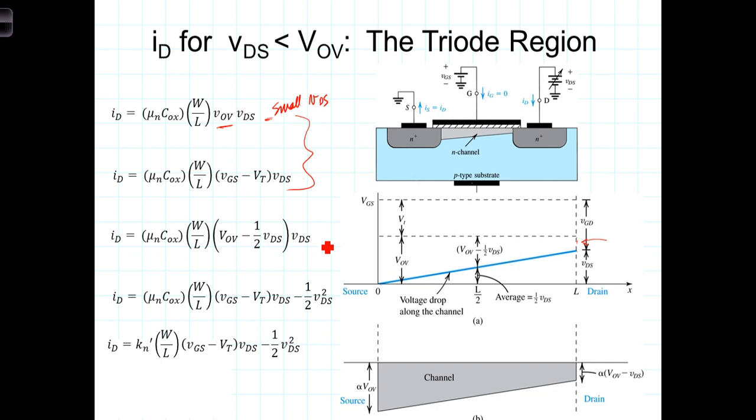We then have this equation, which is the equation for the current under the circumstances when VDS is greater than small, but still less than the overdrive voltage. Once again, we can replace the overdrive voltage with what it in fact is, VGS minus VT, and we then get this equation here.